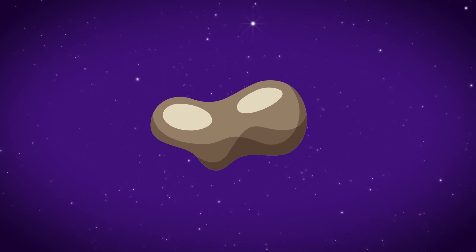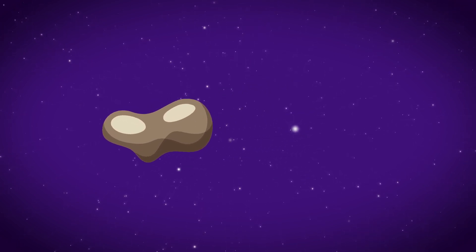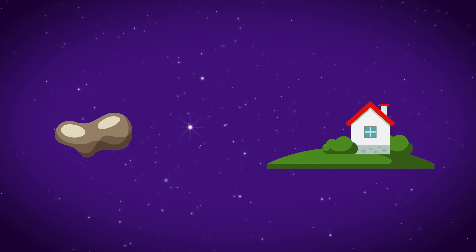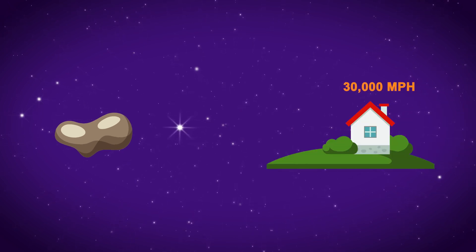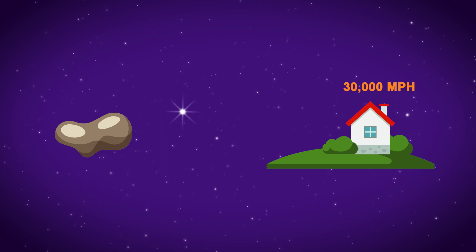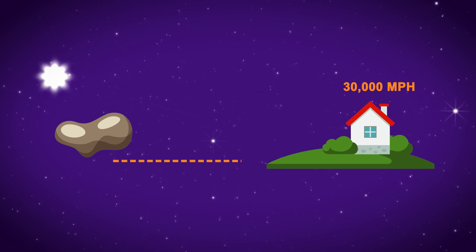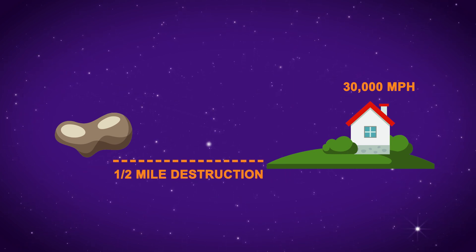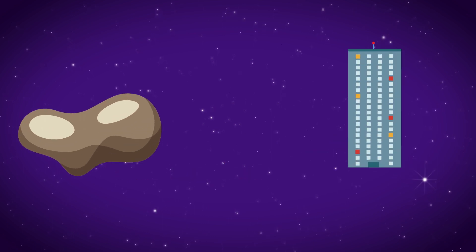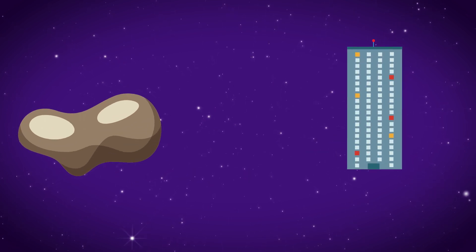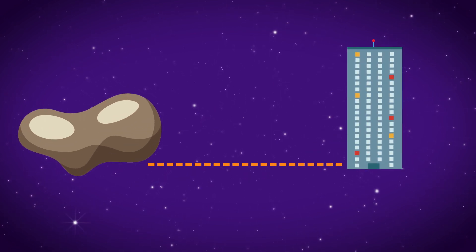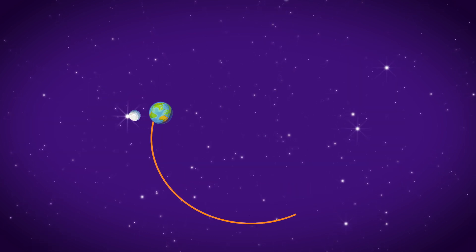What would happen if a smaller asteroid, let's say one the size of a house, crashed into Earth at 30,000 miles per hour? Experts say it would flatten concrete buildings up to a half mile from where it hit. Make that asteroid the size of a 20-story building, it would flatten all the buildings within 5 miles.